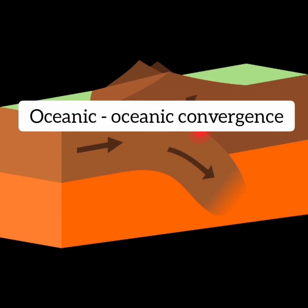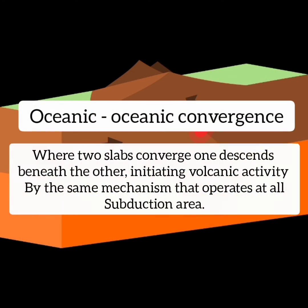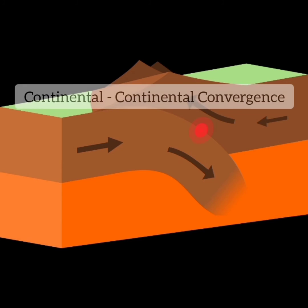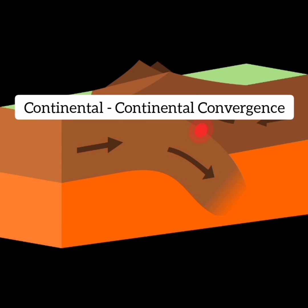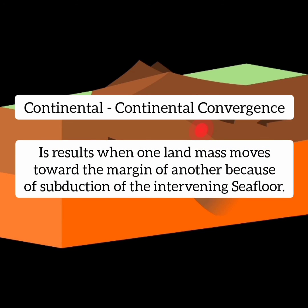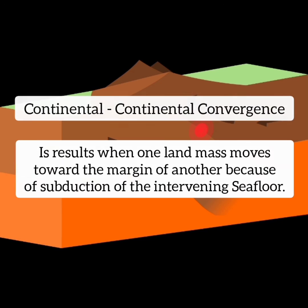At an oceanic-oceanic convergence, where two oceanic slabs converge, one descends beneath the other, initiating volcanic activity by the same mechanism that operates in all subduction zones. The third type of convergent boundary, continental-continental convergence, results when one landmass moves toward the margin of another because of subduction of the intervening seafloor.